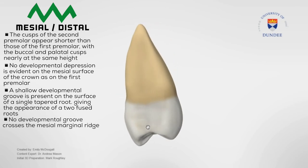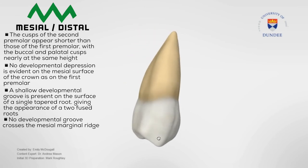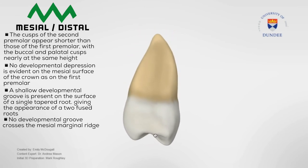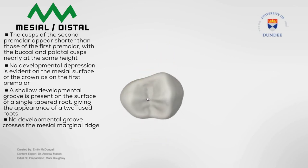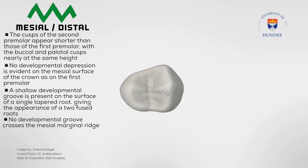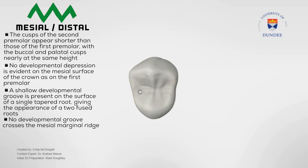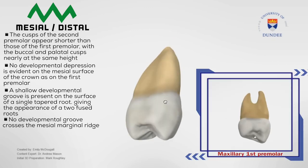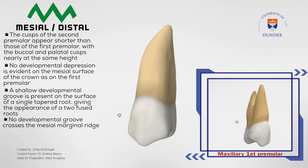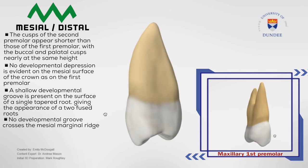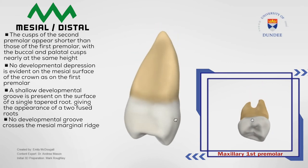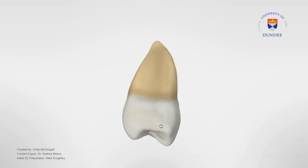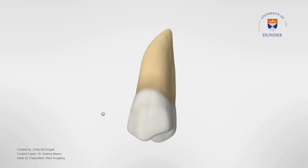No developmental groove crosses the mesial marginal ridge as it does in the first premolar. This is a key factor in identifying the first premolar, where you have a developmental depression on the mesial side which crosses the mesial marginal ridge on the crown and continues up the crown towards the root and up the root into the bifurcation. However, in this tooth that is not present, and it all looks flat or convex sometimes as well.